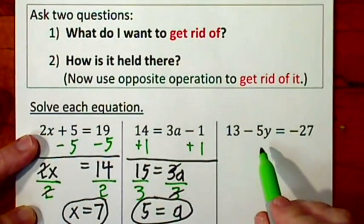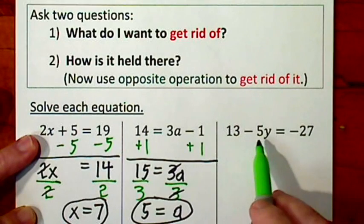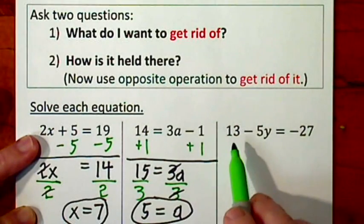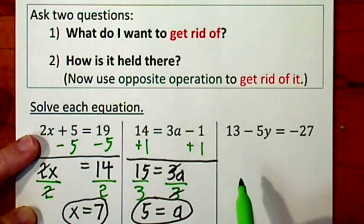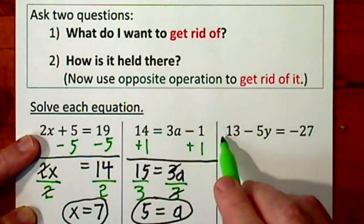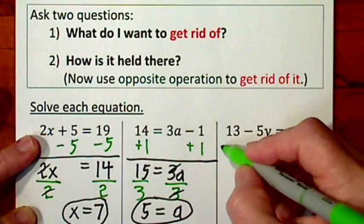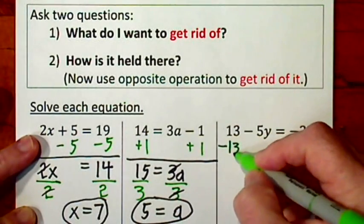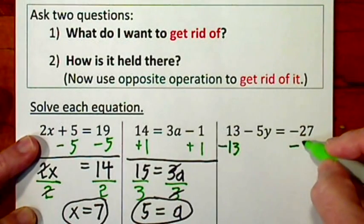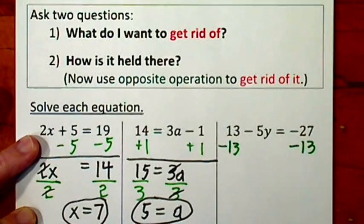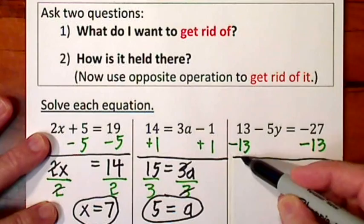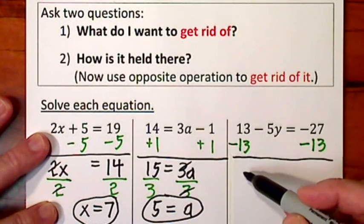Finally, over here, I want to get rid of this negative 5 and I want to get rid of the 13. But the easiest thing to do is get rid of something that's added or subtracted. So I'll get rid of this 13. It's positive 13. So I'll put a negative 13 underneath. I'll come to the other side of the equal sign, negative 13.